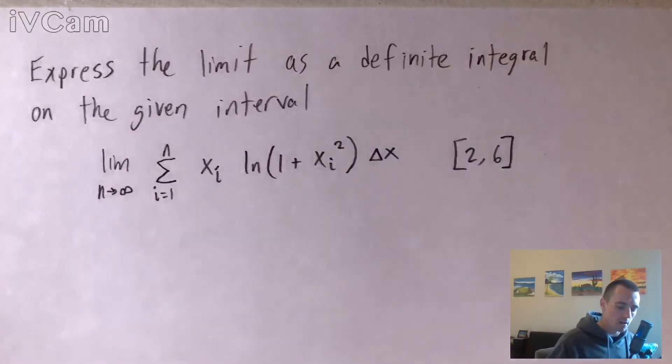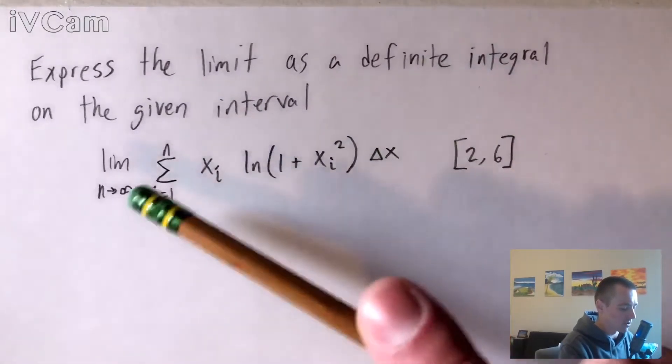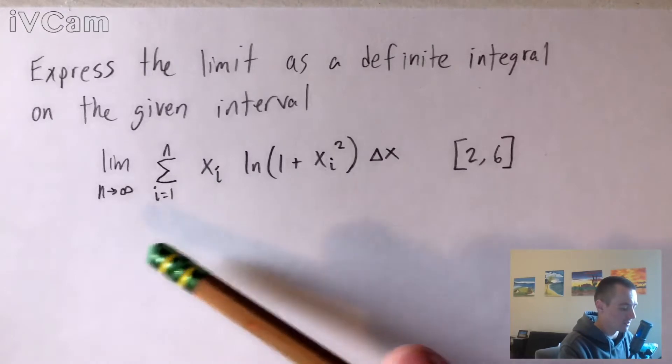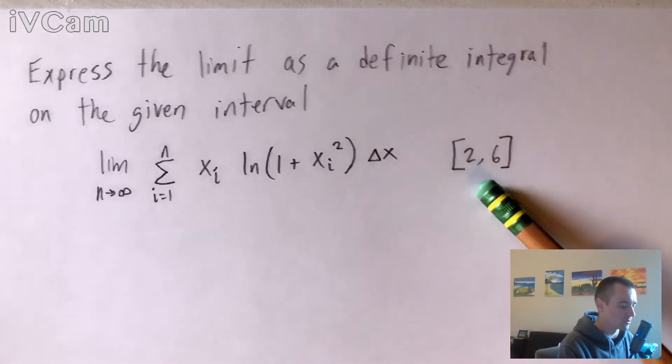Here's the problem we're going to be going over today. We're just going to express the limit as a definite integral on the given interval. So basically, this is the limit that we have, and this is the given interval that we have from 2 to 6.